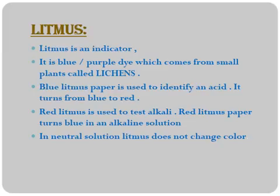Blue litmus paper is used to identify an acid — it turns from blue to red. Red litmus paper is used to test alkali — it turns blue in an alkaline solution. In a neutral solution, litmus doesn't change color. Litmus is commonly used in the lab, and phenolphthalein is also used to test alkali.